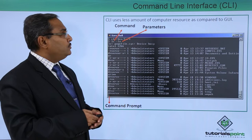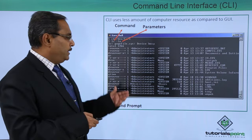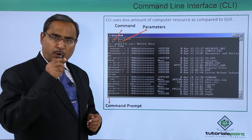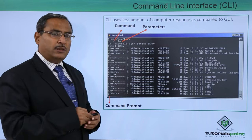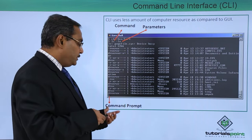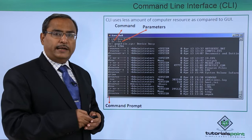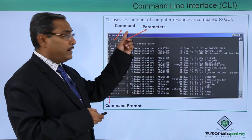CLI uses less amount of computed resources as compared to GUI. Here we have a UNIX-based CLI example. The prompt is denoted by a dollar sign in the UNIX environment, indicating you are logged in as an ordinary user. If you have a hash symbol as the prompt, that means you are logged in as a super user or administrator. The command issued here is LS, which in UNIX or Linux stands for list.